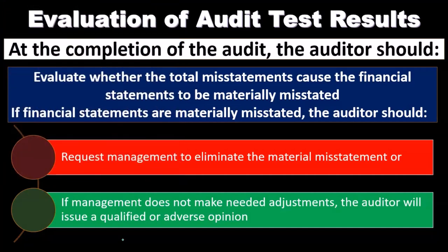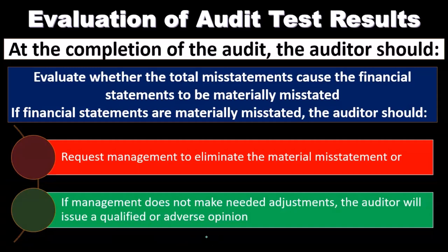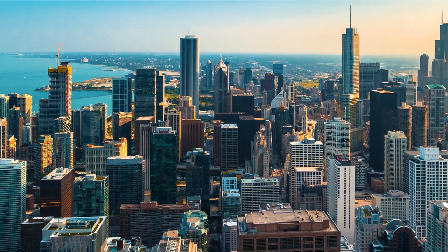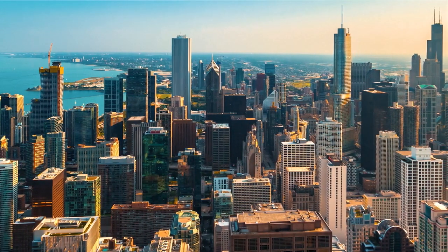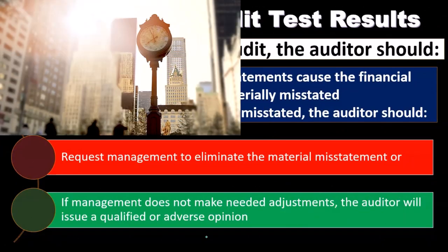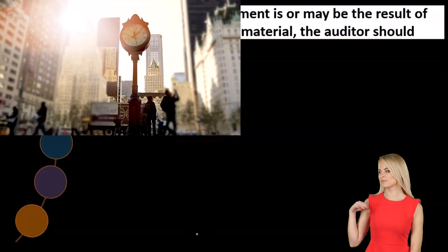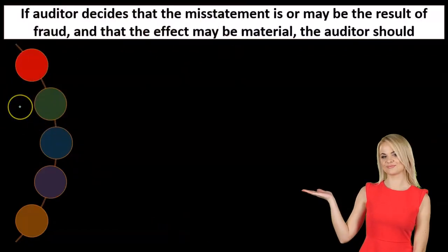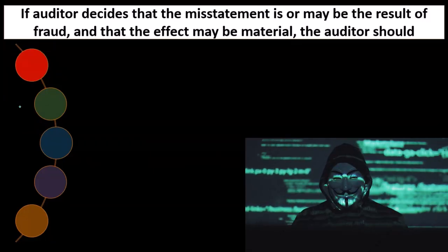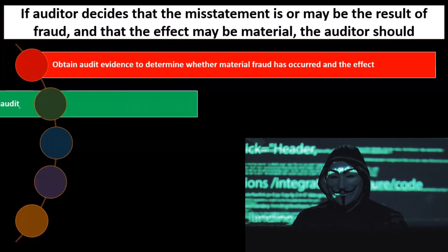If the issues are more pervasive, we have to give an adverse opinion, which is essentially useless to the company. If there's no agreement on the corrective action management should take, we might also have to disengage from the engagement. If the auditor decides the misstatement is or may be the result of fraud and the effect may be material, the auditor should obtain audit evidence to determine whether material fraud has occurred and assess its effect.